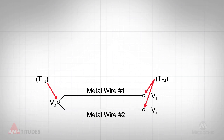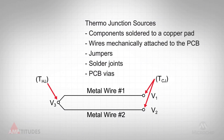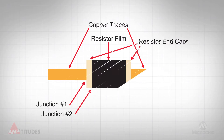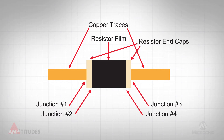When two dissimilar metals come into contact and that junction is heated, a voltage shift will occur. This is commonly known as the Seebeck effect and is the basis of how thermocouples are used to measure temperature. However, there are lots of unintended thermal junctions on a typical printed circuit board design, such as components soldered to the copper pad, vias, jumpers, and so forth. Let's take a look at how these thermal junctions can affect the accuracy of a precision circuit.